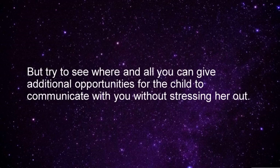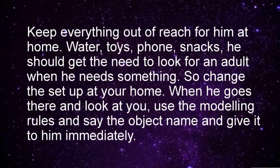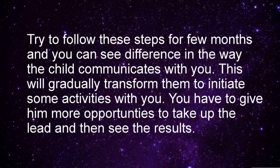Even at home, you can keep all things out of reach. List all the places where the child goes and takes things by himself without looking for your help — put those on a list and ensure you are keeping all those things away from him. Keep everything out of reach at home: water, toys, phone, snacks. He should feel the need to look for an adult when he needs something. So change the setup at your home. When he comes and looks at you, use the modeling rules and say the object name, then give it to him immediately. That way he doesn't stress himself, and he will notice you and understand that he just needs to say the name. You just model him, don't teach him. Try to follow these steps for a few months and you can see a difference in the way the child communicates with you. This will gradually transform them to initiate activities with you.